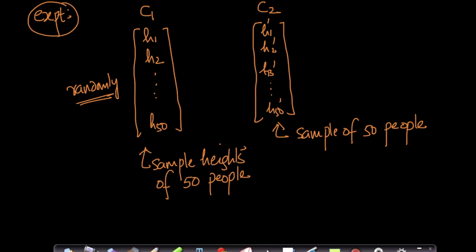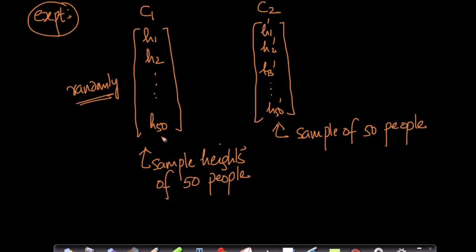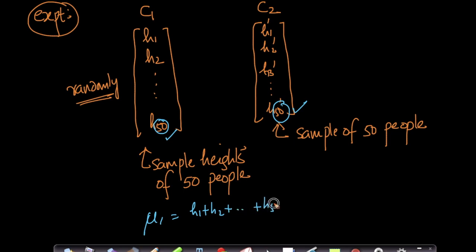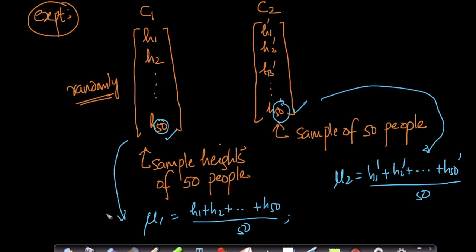These cities may have populations of 1 million or 2 million, but we randomly pick 50 from each because measuring 50 people's heights is feasible. Now let's compute the sample mean. The sample mean for City 1, mu1, is (h1 + h2 + ... + h50) / 50. Similarly, mu2 is (h1' + h2' + ... + h50') / 50 — the sample mean height of people in City 2.